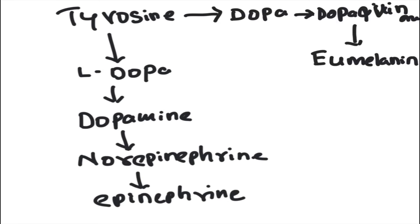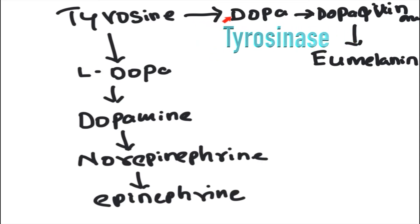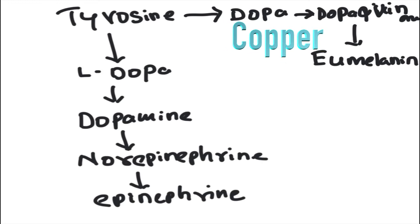Another special fate of tyrosine occurs in skin cells called melanocytes. These cells convert tyrosine into DOPA, and DOPA into dopaquinone — both reactions catalyzed by tyrosinase enzyme. This tyrosinase enzyme needs copper as its cofactor, unlike tyrosine hydroxylase in neurons which needs tetrahydrobiopterin.